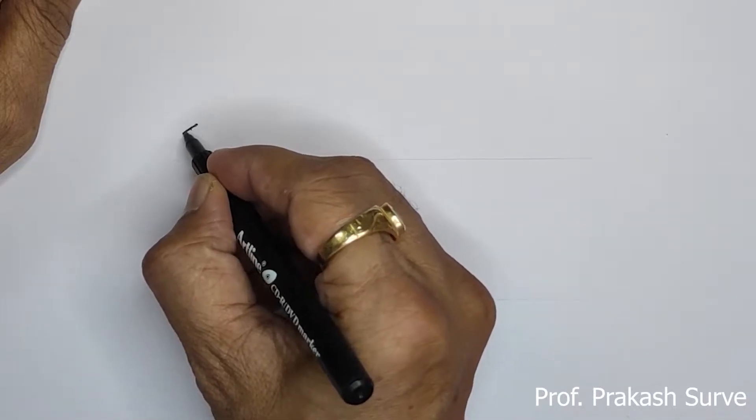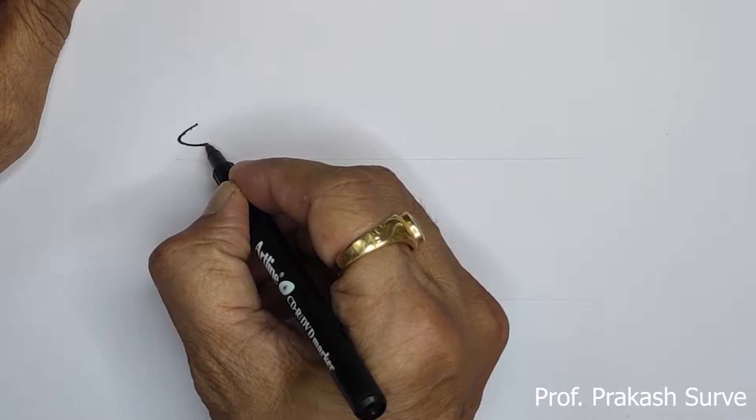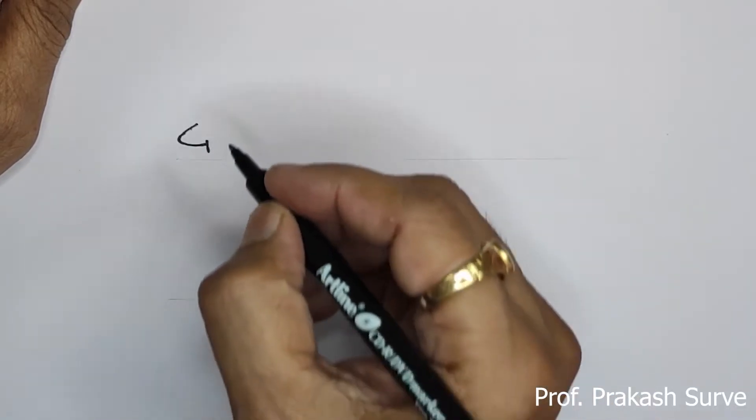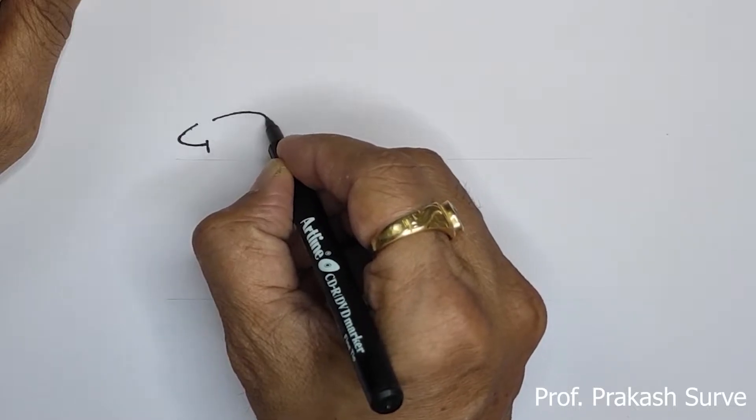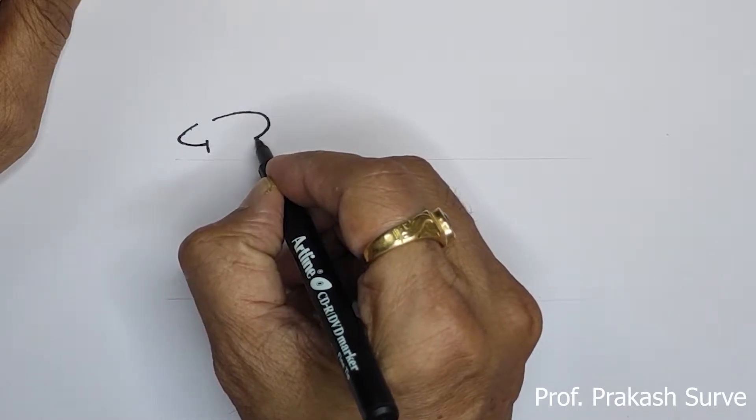Make a full number like that here, number 4. Same shape. Now leave some gap and draw number 2 which is a little bit bigger one. So you got the rough idea about the rat.